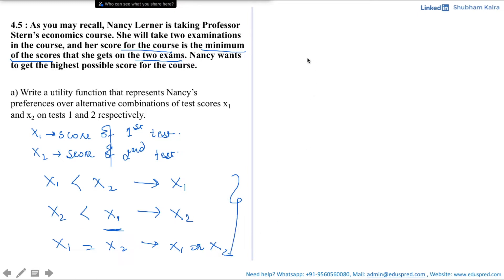Now, if I summarize this and write it in a formal manner, then this function turns out to be your utility function of two variables, X1 and X2. So that is U(X1, X2) would be equal to minimum of X1, X2.